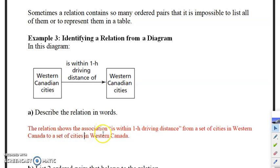The relation shows the association - we use that word association, and that's basically from your arrow diagram going from one to the next. So it's 'is within one hour driving distance' from a set of cities in Western Canada to a set of cities in Western Canada.